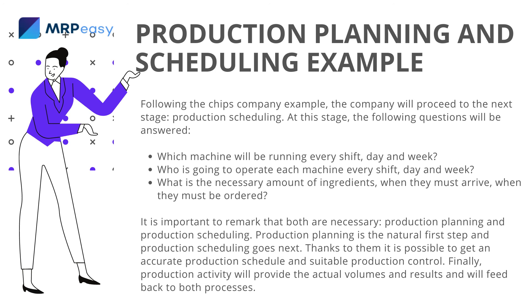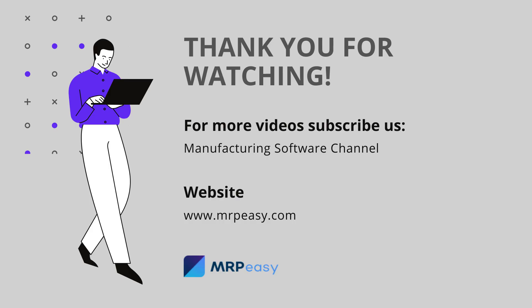It is important to remark that both are necessary: production planning and production scheduling. Production planning is the natural first step, and production scheduling goes next. Thanks to them, it is possible to get an accurate production schedule and suitable production control. Finally, production activity will provide the actual volumes and results, and will feed back to both processes.